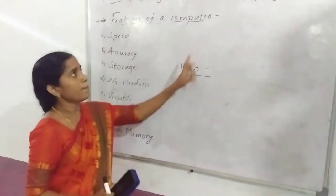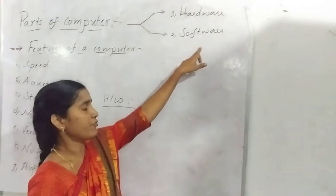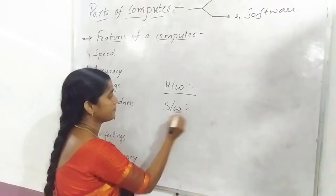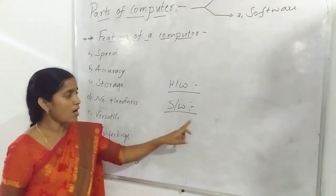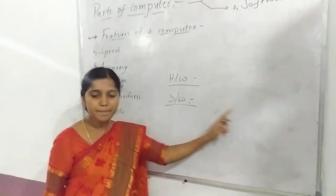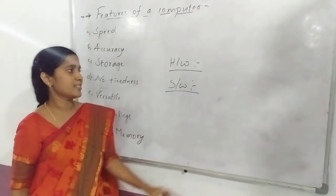And next, the part of a computer is software. What is software? Software is a set of instructions.